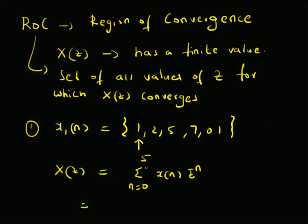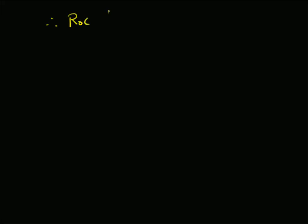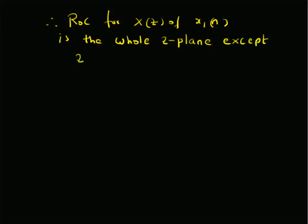Upon substitution and expansion, we have 1 + 2z⁻¹ + 5z⁻² + 7z⁻³ + 0 + z⁻⁵. This function converges for all values of z except z equals 0, since at z equals 0 we get infinity. So the ROC for x1(n) is the whole z-plane except the origin, that is, z ≠ 0.